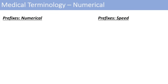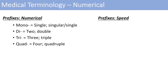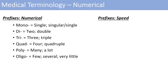Getting into some numerical prefixes — this one's pretty easy. Mono just means single or singular. Di means two or double. Tri means three or triple. Quad is four or quadruple. Poly means many or a lot. And oligo is a blanket term that just means there are just a few, several, or very little.